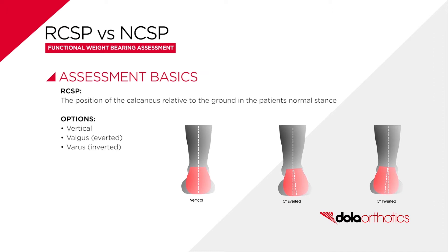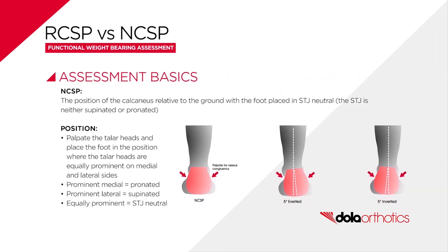A visual analysis of calcaneal frontal plane position, talonavicular joint prominence, medial arch congruence, forefoot transverse plane position, supra and infralateral malleolar curves, and talar head palpation is used in the foot posture index score.